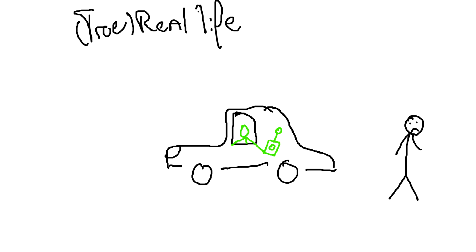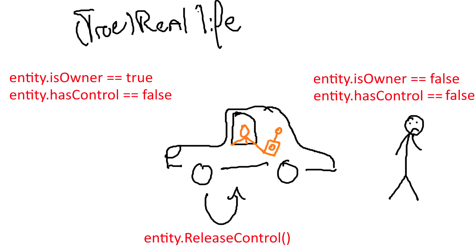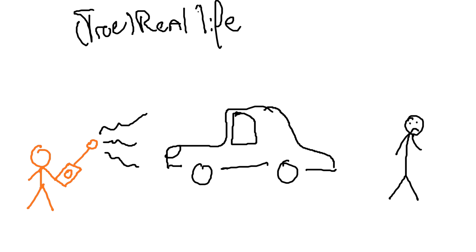As an owner, we can take control of an entity that we own, which means we can drive it — not just with the remote control, but physically. We mark the peer as green to show we are both owner and controller of the entity. We can also release the control, changing the hasControl property of the entity to false, meaning we lose physical control and can only control the car via remote control.